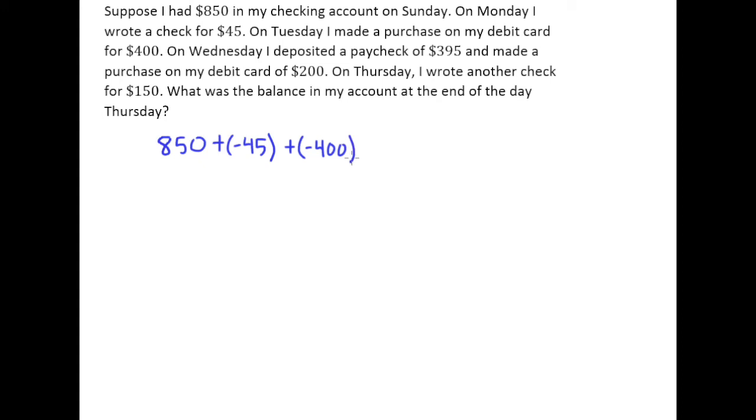On Wednesday, I deposited a paycheck of $395. So that's good. That's money coming back into my account. So I'll be adding a positive $395. But then on that same day, I made a debit card purchase worth $200. So that's another negative number indicating money coming out of my account. Finally, on Thursday, I wrote another check for $150. So that's another negative.